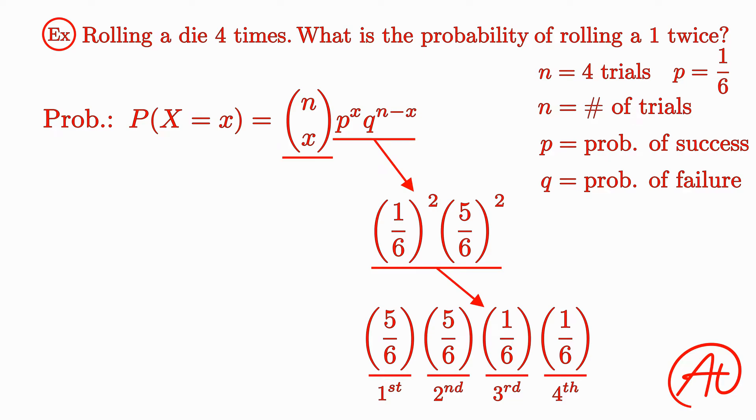Basically, what this value gives us is the total number of different ways you can write your desired outcome. In other words, out of our n trials, how many ways are there to have x successes? Or for our example, out of four rolls, how many ways are there to roll a 1 twice?